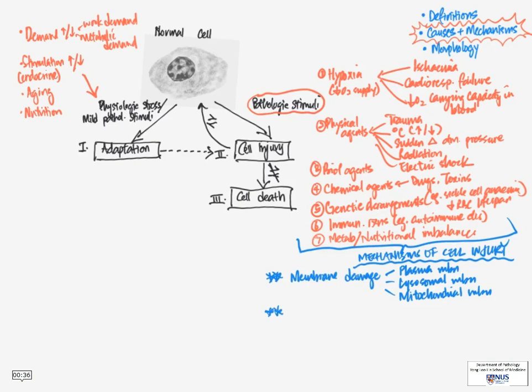Another very important part of the mechanism of cell injury is ATP depletion. Now, ATP is responsible for making sure the cell has enough energy to perform its functions, active functions.